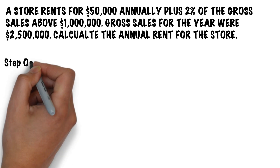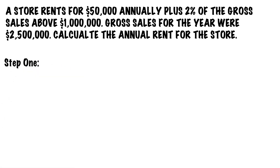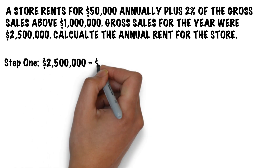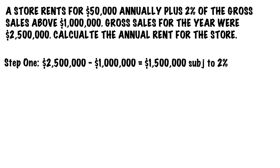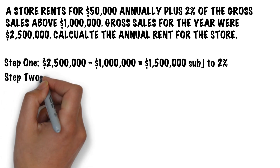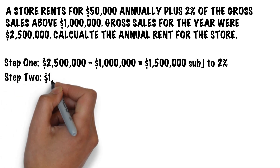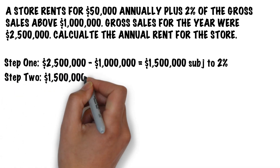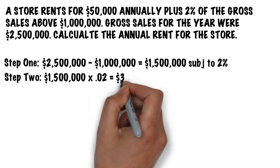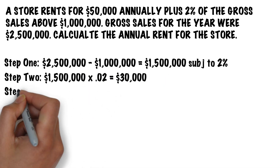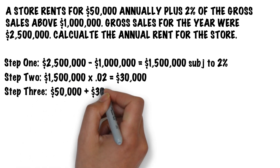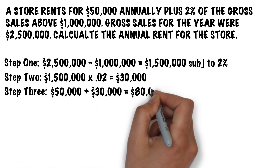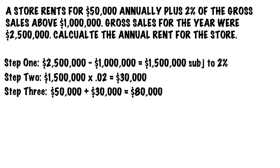Okay. First, we take the $2,500,000 total and subtract the $1,000,000 sales threshold to get $1,500,000 that is subject to the 2% charge. Then, take the $1,500,000 and multiply it by 2%, or 0.02, to get the additional annual rent of $30,000. Then, take the annual base rent of $50,000, add it to the additional annual rent of $30,000, and you'll get the total annual rent of $80,000.